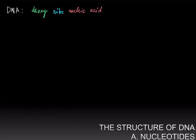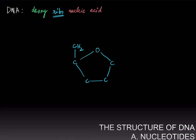DNA is called deoxyribonucleic acid. Ribo refers to ribose sugar, which has five carbon atoms, and there are hydroxyl groups on two of these carbons. It's possible to number the carbon atoms in this ribose sugar starting from the oxygen atom and going clockwise: one, two, three, four, and five.